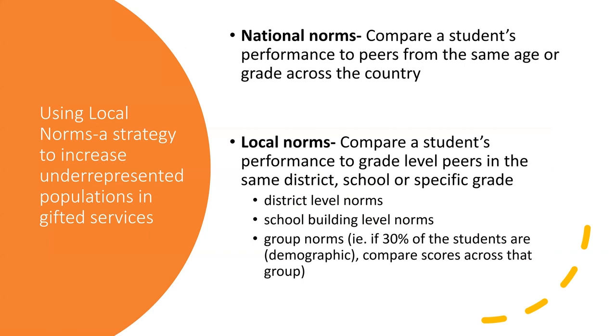By using local norms, you can determine who is so far from the mean that they are in need of specialized services. That's really what we're doing in gifted education—looking at the average student and determining who needs different services. By using local norms, you may not be identifying students at the 97th, 98th, or 99th percentile. You may have kids in your school that are very different from the mean and need specialized services, qualified at a 90th percentile.